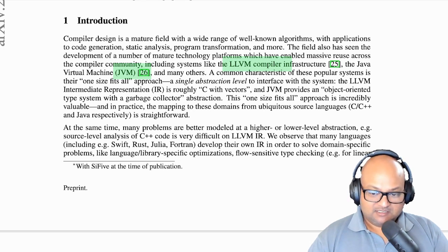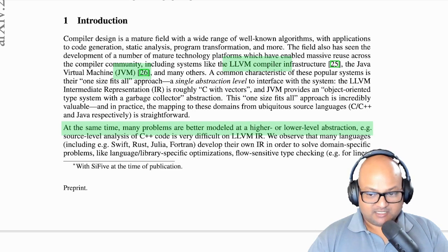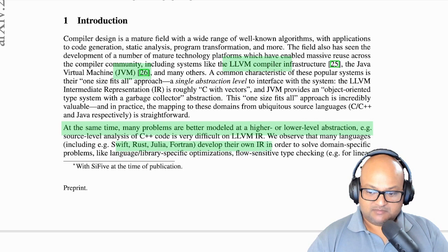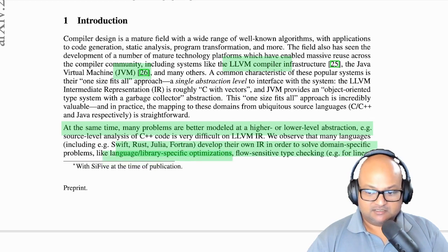And the main reason is that there are many problems we find that are better modeled at a different level of abstraction than existing infrastructure like the JVM or the LLVM tool chain allow. We see that many compiler developers make their own IR to solve domain-specific problems, such as language or library-specific optimizations or some kind of flow-sensitive type checking that is very domain-specific.